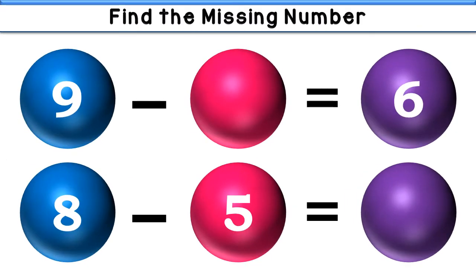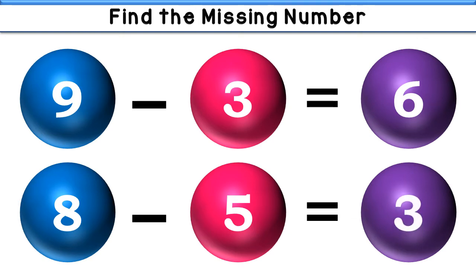9 minus what is equal to 6? The number is 3. 9 minus 3 is equal to 6. Next: 8 minus 5 is equal to what? Yes, it is 3. 8 minus 5 is equal to 3.